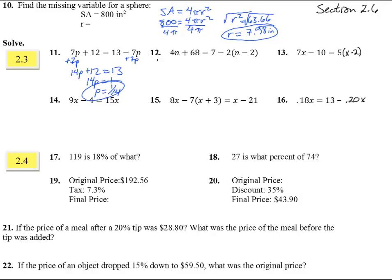Number 12. I've got to distribute and get rid of those parentheses. 4n plus 68 equals 7 minus 2n. That's a plus 4. Crucial little sign there. Let's try to get the n's together. Let's add 2n to both sides.